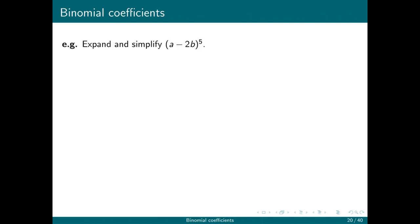Let's do another example. We're going to expand and simplify the polynomial a minus 2b to the fifth power. And the binomial theorem says that this is going to be equal to the sum from 0 to 5 of 5 choose r times a to the r.